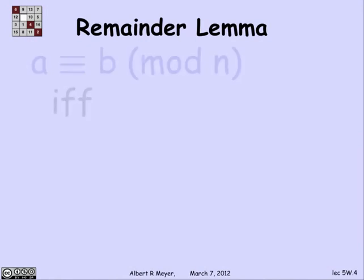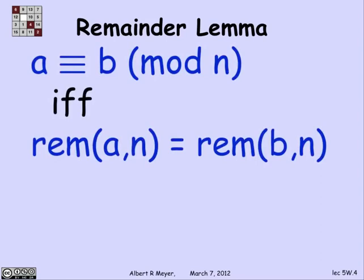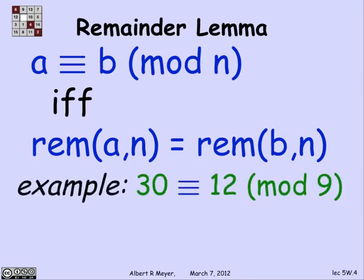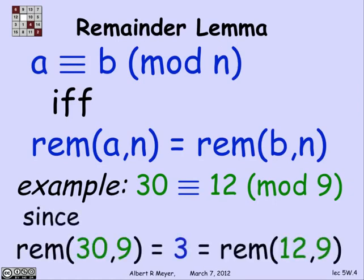Another way to understand congruence is the so-called remainder lemma, which says that a is congruent to b mod n if and only if a and b have the same remainder on division by n. Using this equivalent formulation: 30 is equivalent to 12 mod 9 because the remainder of 30 divided by 9 is 3 — since 3 times 9 is 27, remainder 3 — and the remainder of 12 divided by 9 is also 3. So they have the same remainder and they're congruent.